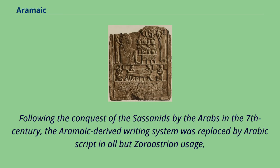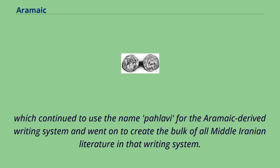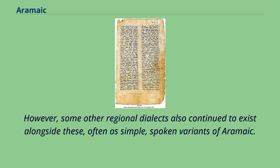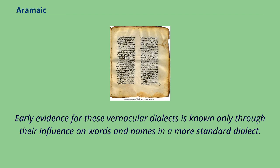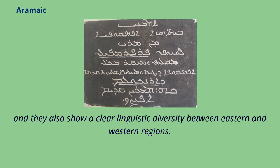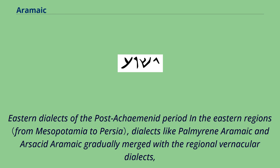Some regional dialects also continued to exist alongside the standard Achaemenid-derived varieties, often as simple spoken variants of Aramaic. Some of those regional dialects became written languages by the 2nd century BC, showing a clear linguistic diversity between Eastern and Western regions. In the Eastern regions, dialects like Palmyrene Aramaic and Sassanid Aramaic gradually merged with regional vernacular dialects. In the Kingdom of Osrhoene, founded in 132 BCE and centered in Edessa, the regional dialect became the official language — Edessan Aramaic — that later came to be known as Classical Syriac. On the upper reaches of the Tigris, East Mesopotamian Aramaic flourished, with evidence from the regions of Hatra and Assur.